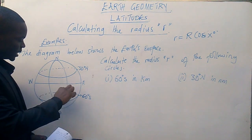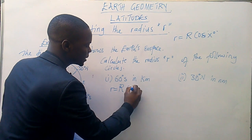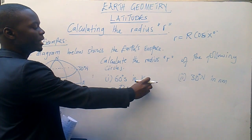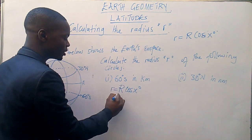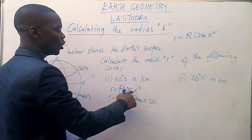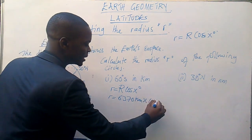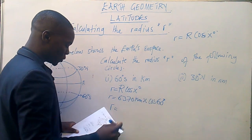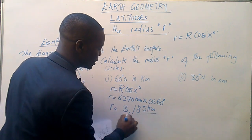So, for us to calculate the radius of this latitude, we must use that formula. Always start with the formula. We say: small r is equal to R cos x degrees. This capital R is the radius of the Earth. Since we are required to give our answer in kilometers, we are going to use the radius in kilometers. We know that R is equal to 6370 kilometers, times cos. The value of x is the circle we have been given, which is 60 degrees. So when you multiply 6370 times cos 60°, you are going to have 3185 kilometers.